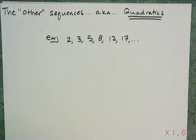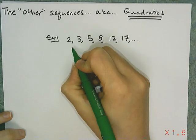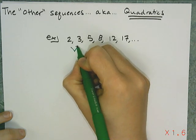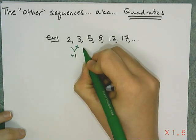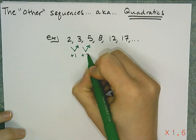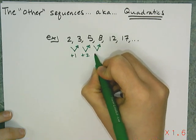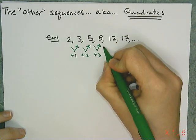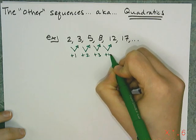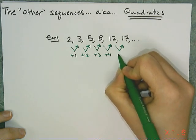And when I'm trying to describe a sequence or figure out what kind of sequence it is, I look for one of two things first. I either look for a pattern in what I'm adding or a pattern in what I'm multiplying. So for these, I'm going to see if there's a pattern in what I add. To go from 2 to 3, I add 1. From 3 to 5, I add 2. From 5 to 8, I add 3. From 8 to 12, I add 4. And from 12 to 17, I add 5.